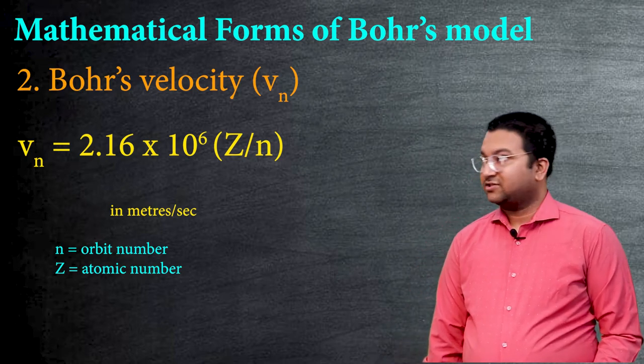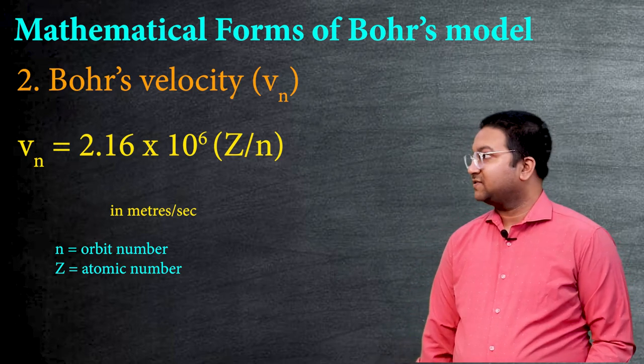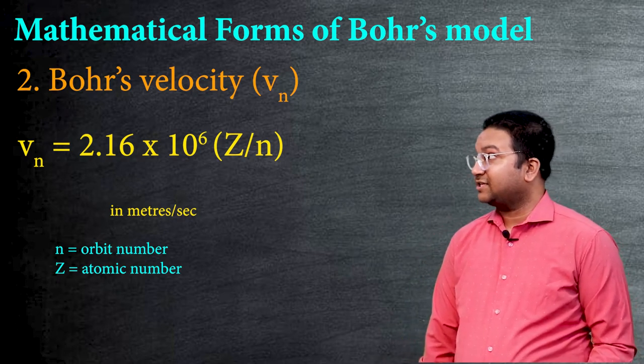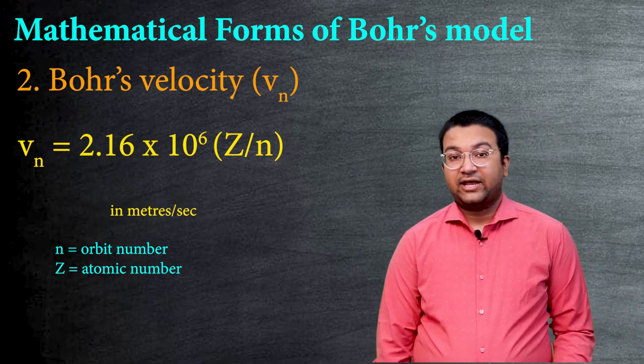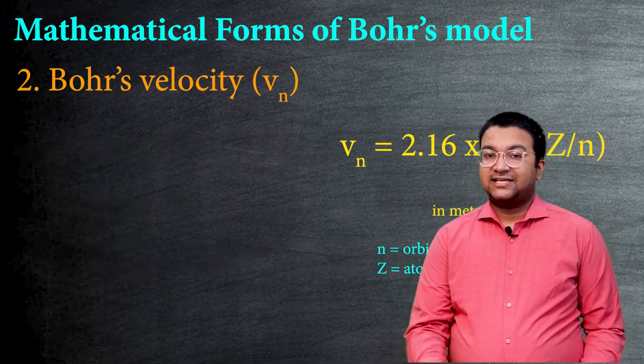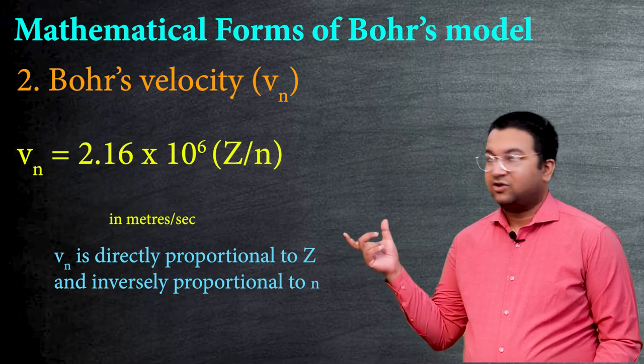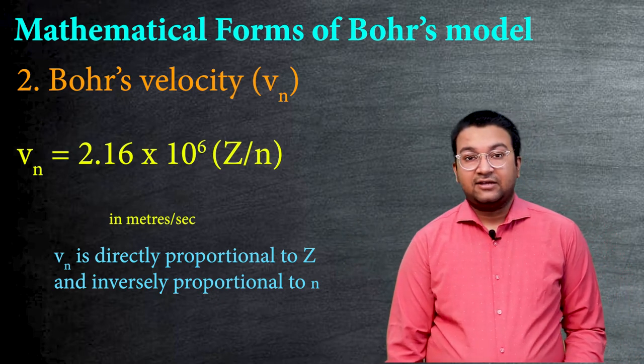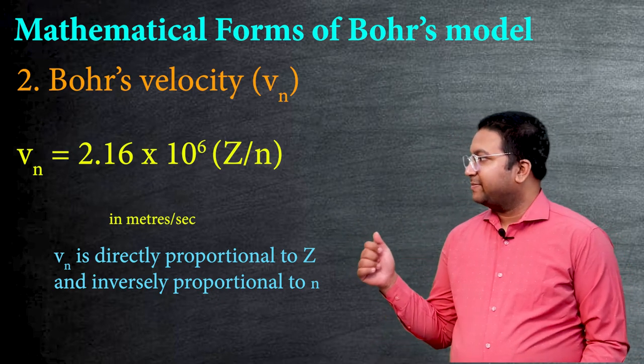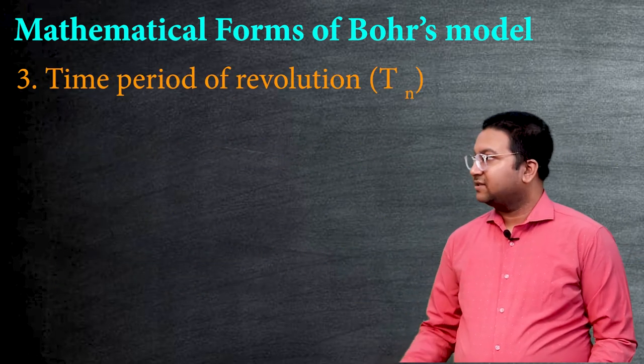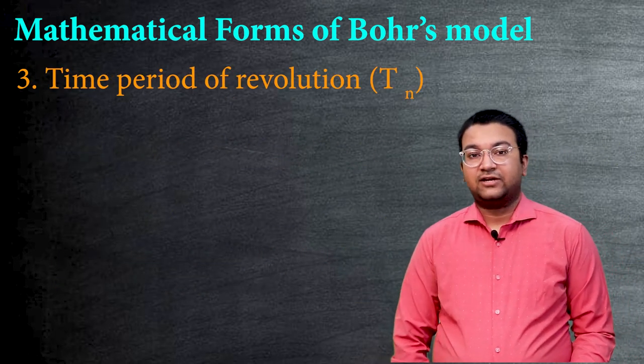Next mathematical formula is Bohr's velocity. Bohr's velocity is given as Vn, which is equal to 2.16 × 10⁶ into Z upon n meter per second. So as we can see that this is almost 137th speed of light. So we can see that V will be proportional to Z while inversely proportional to n.